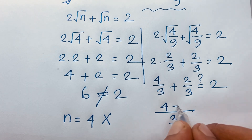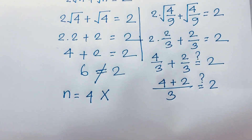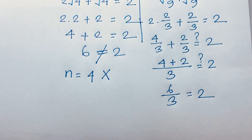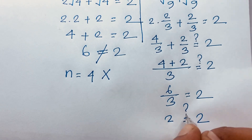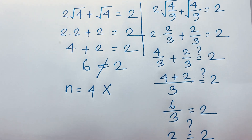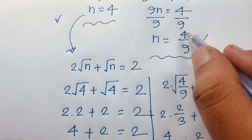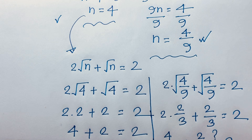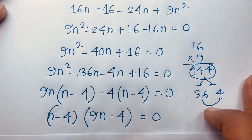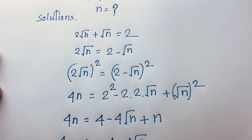We get 4 + 2 = 6 over 3, and 6 divided by 3 equals 2. So left-hand side equals right-hand side when n = 4/9. Our final answer is n = 4/9. Thank you all — if you enjoyed this video, please subscribe to my channel for more interesting videos. Goodbye, take care!